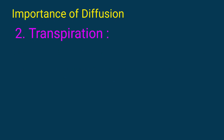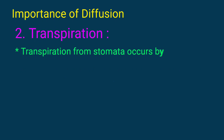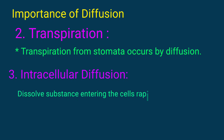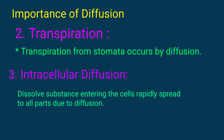Transpiration from stomata occurs by diffusion. Intracellular diffusion: dissolved substances entering the cell rapidly spread to all parts due to diffusion.